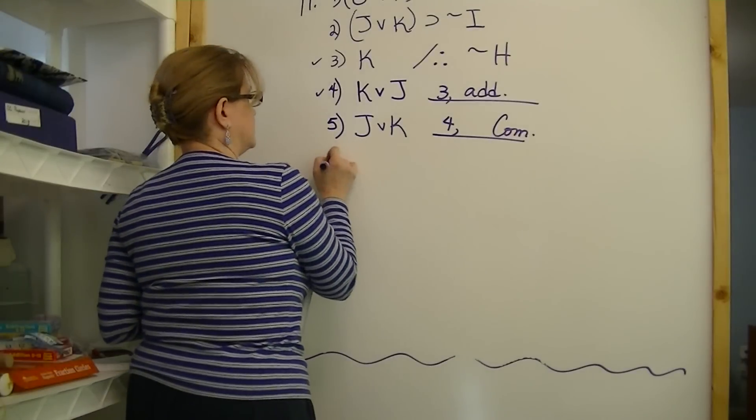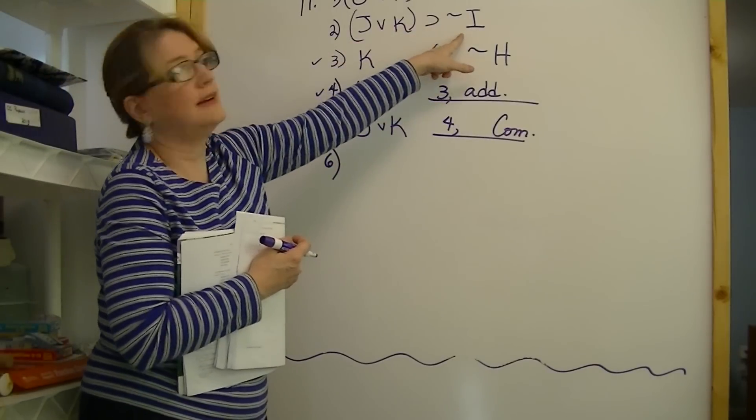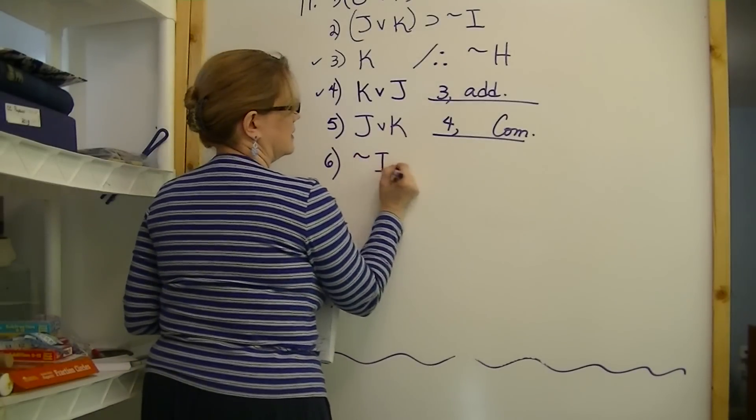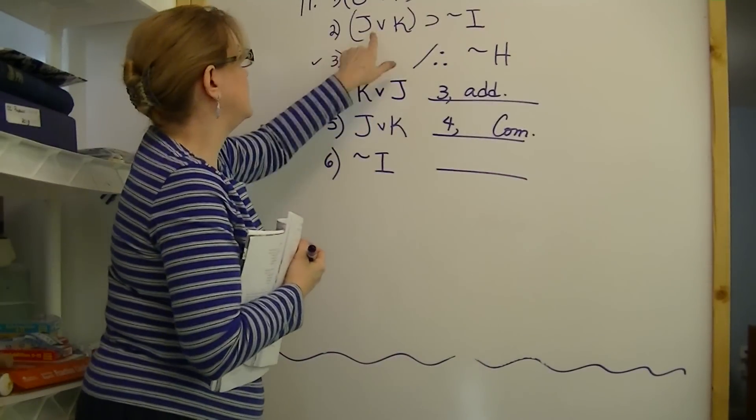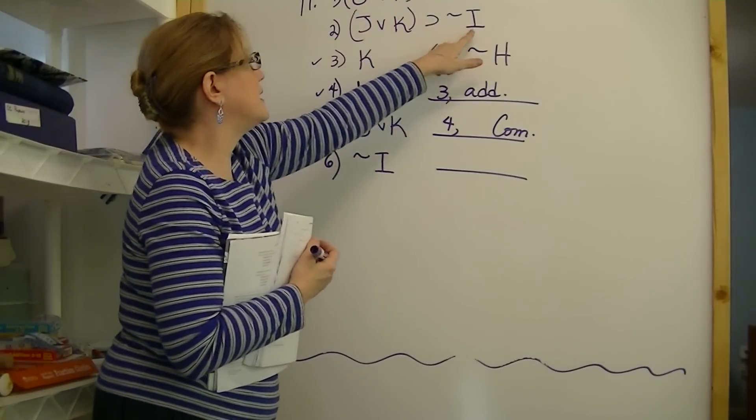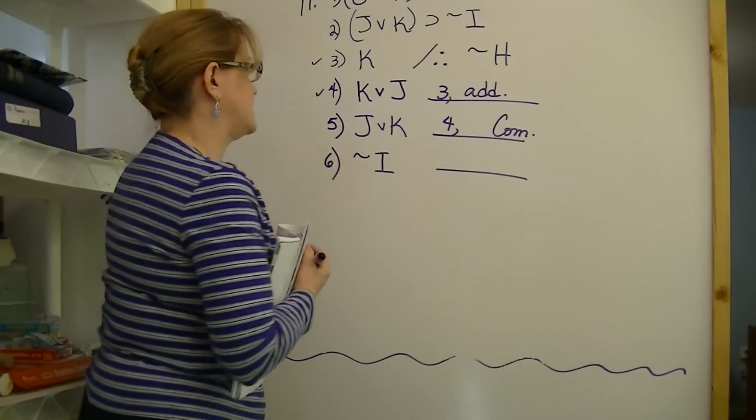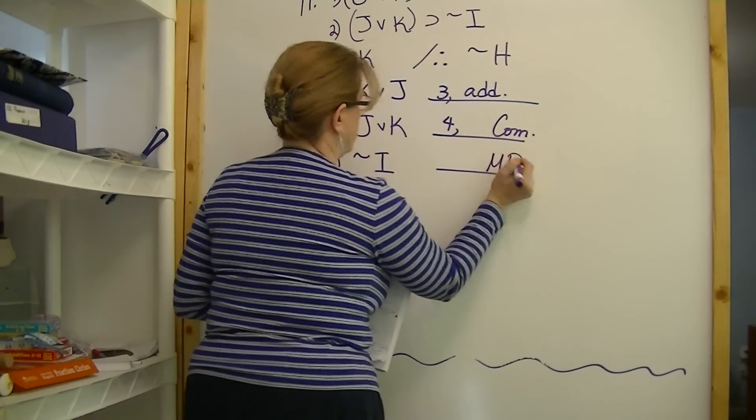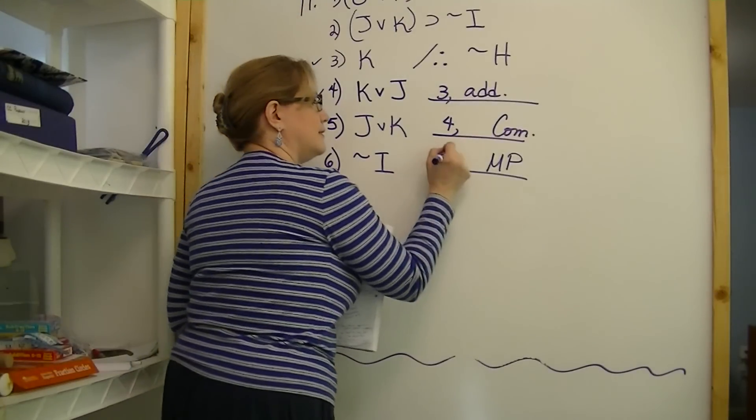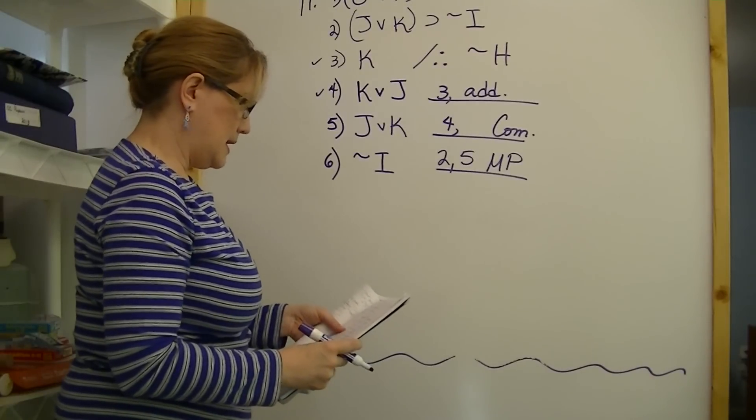Next. What can we derive now? We've got J or K. If J or K, then not I. So we have not I. And that would be, if antecedent, then consequent. Antecedent, therefore consequent. That's modus ponens using lines two and five. Number seven.